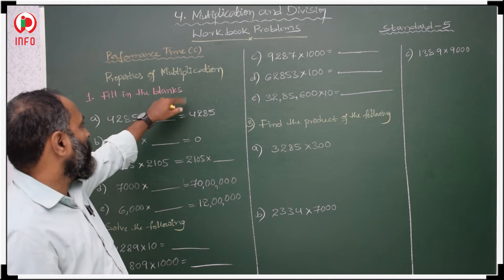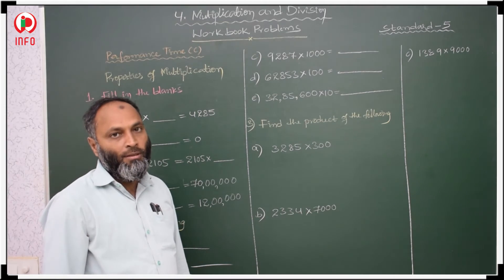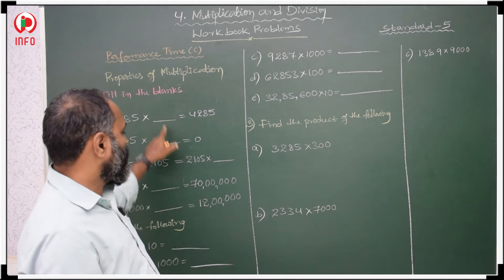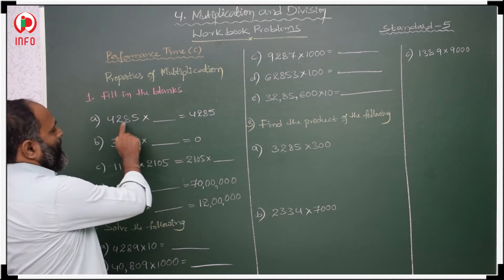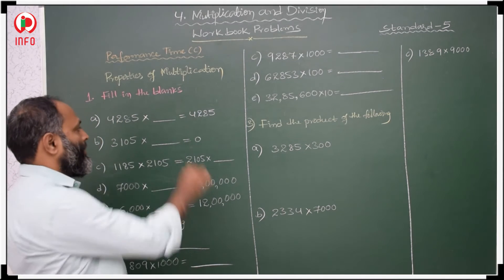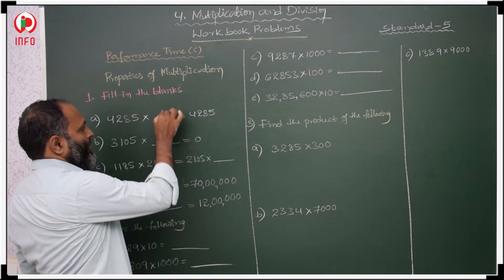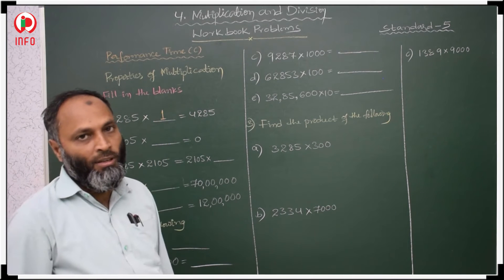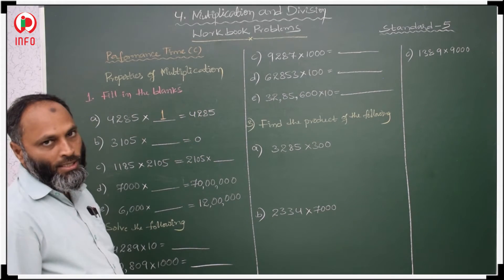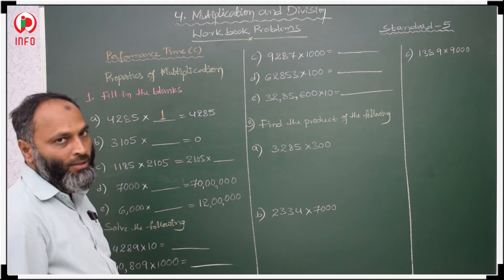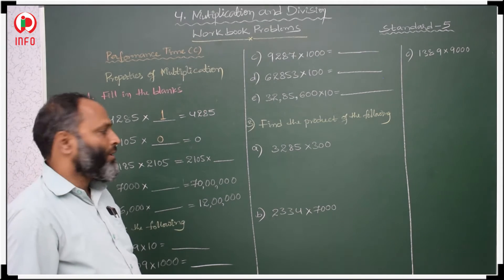Next, properties of multiplication. In performance C, properties of multiplication are given, so on the basis of these properties we have to fill in the blanks. When the question and answer are the same, the number is multiplied with 1 — if any number is multiplied with 1, the answer is the number itself. Here the answer is 0, the product is 0. When do we get 0? If the number is multiplied with 0.